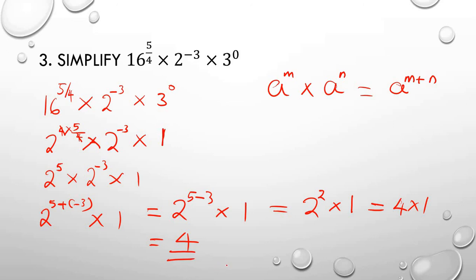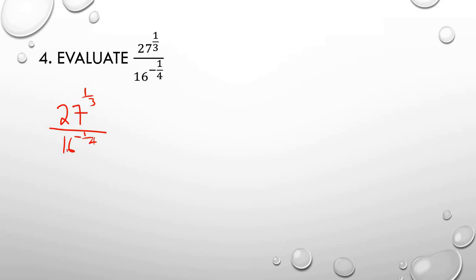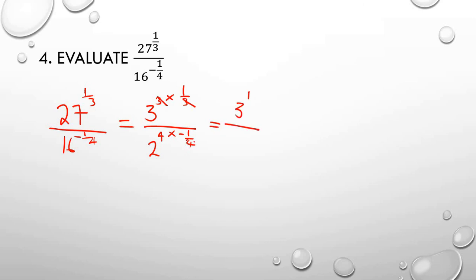Next we have to evaluate: 27 raised to power 1 over 3, over 16 raised to power minus 1 over 4. We reduce 27 to index form — 27 is 3 raised to power 3 — multiplied by the given factor 1 over 3. And 16 is 2 to the power 4, raised to minus 1 over 4. Simplifying, we have 3 over 2 to the power minus 1.